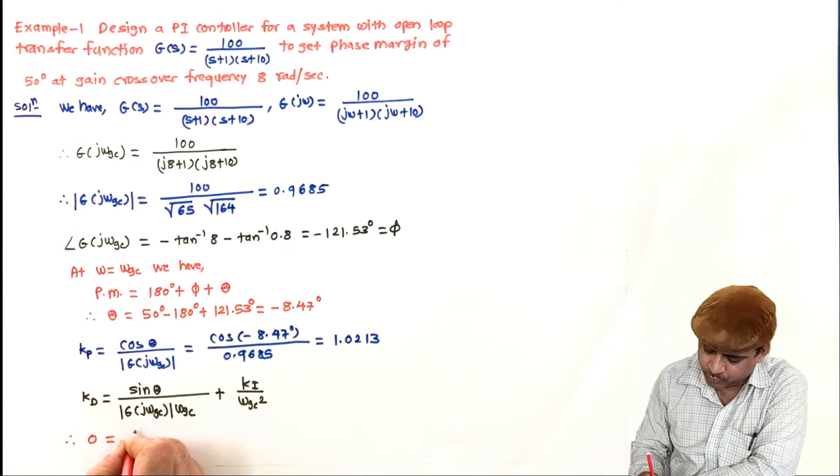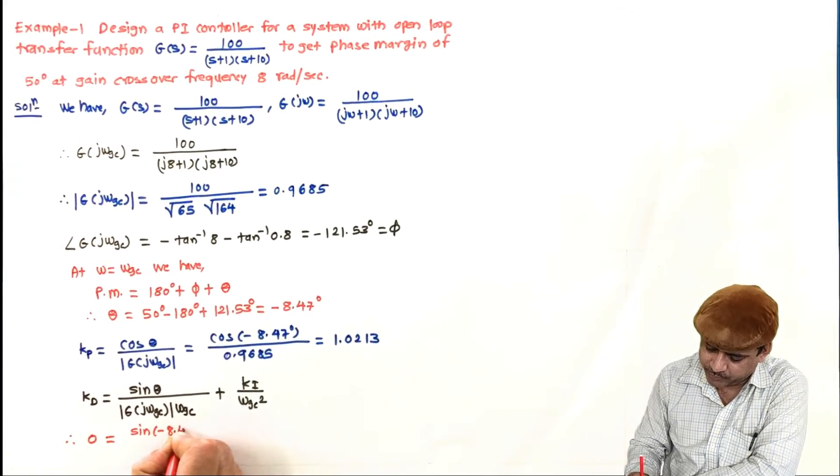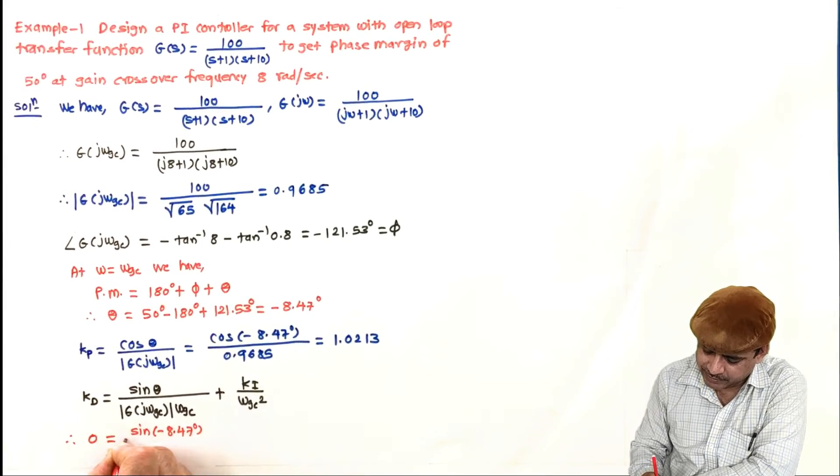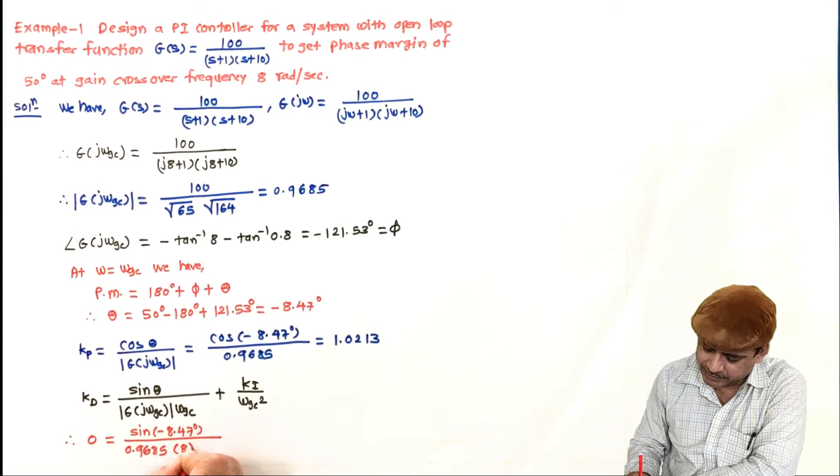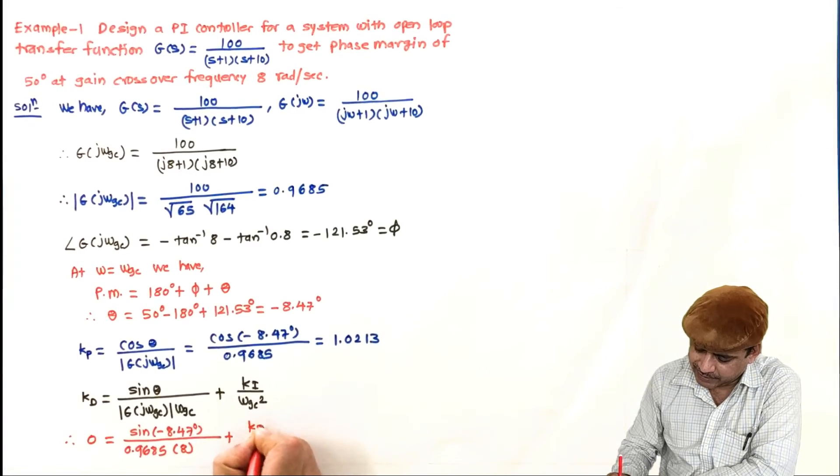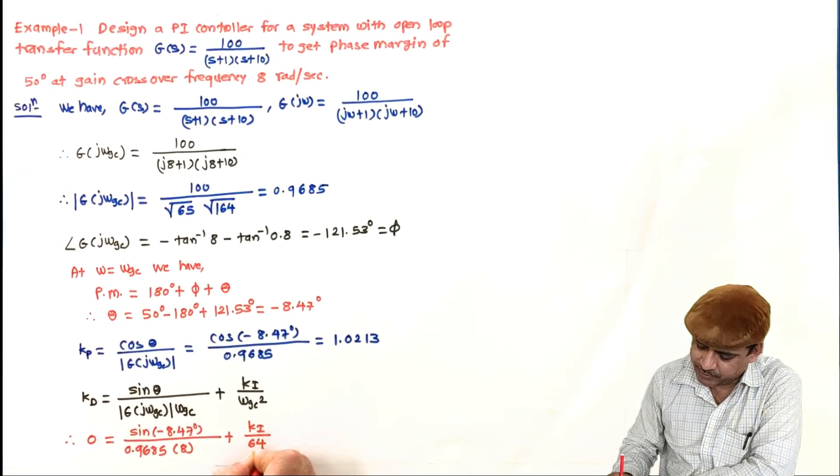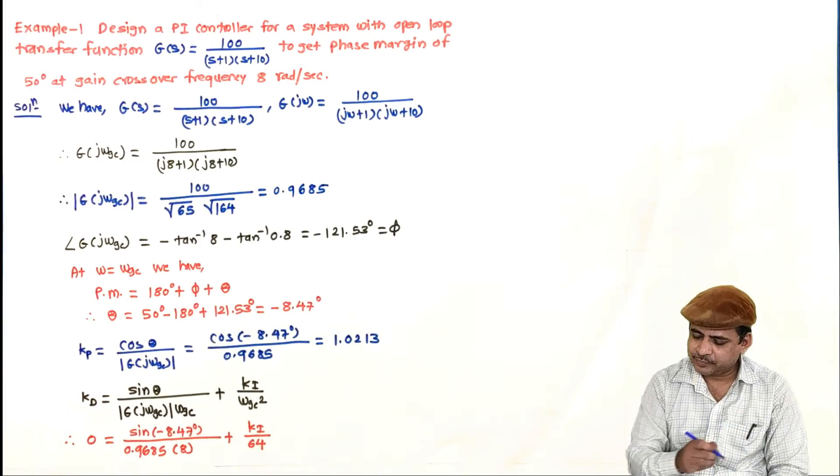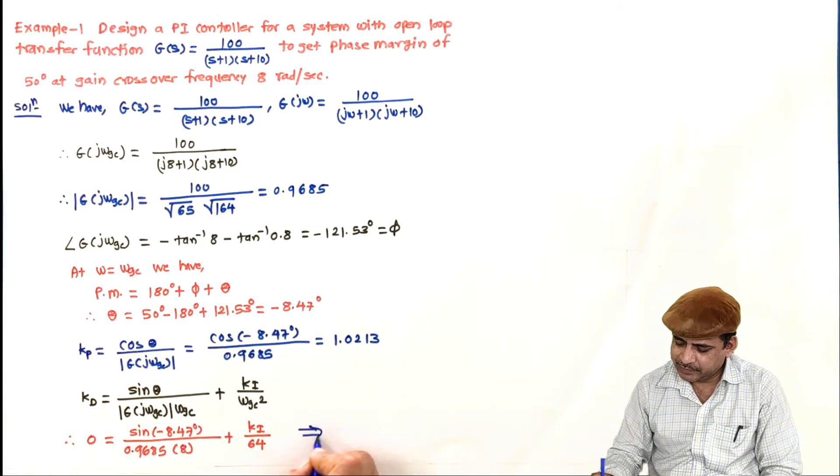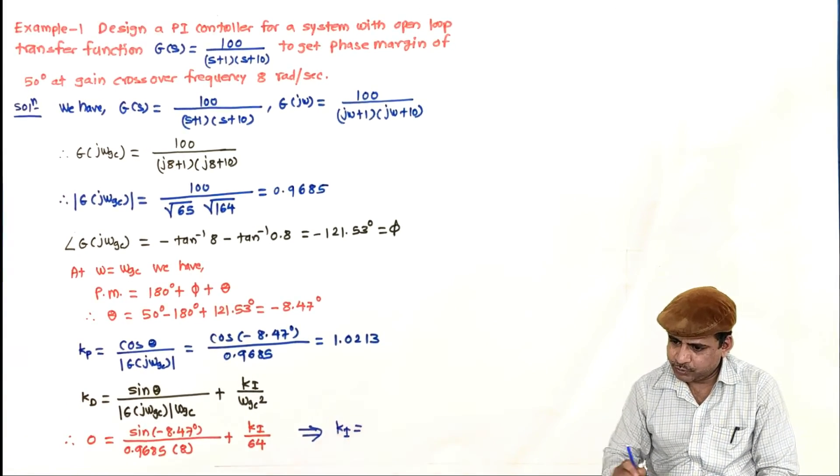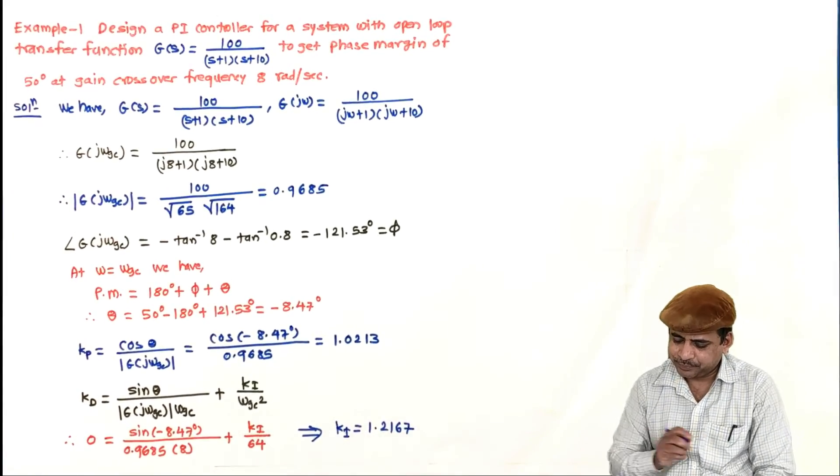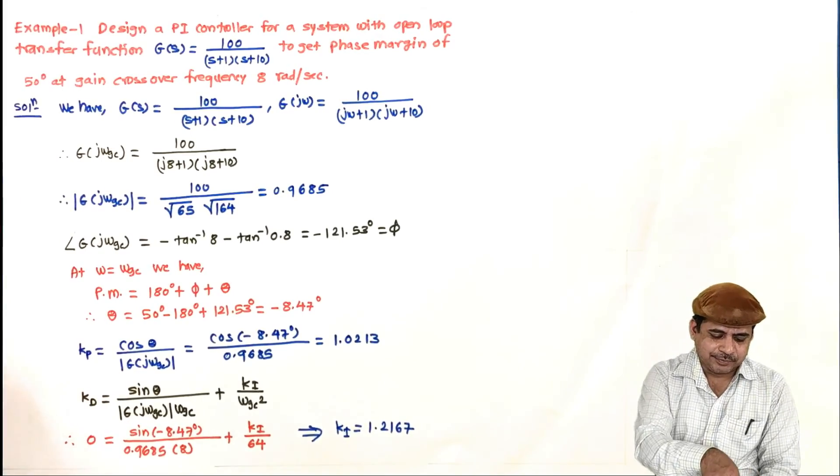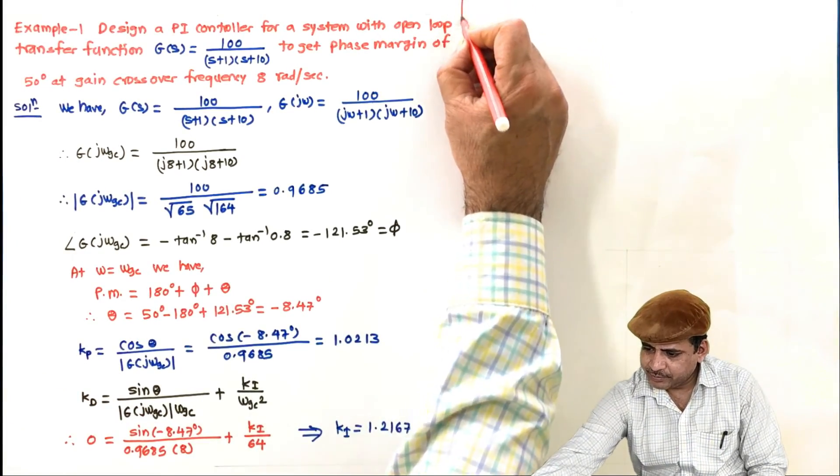Upon solving this, setting Kd equal to 0 in the formula gives sin θ divided by magnitude times ωgc equals 8 plus Ki by ωgc squared equals 64. Upon solving this we get Ki is equal to 1.2167.